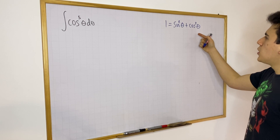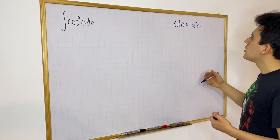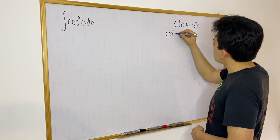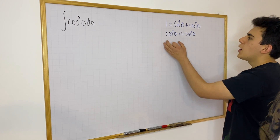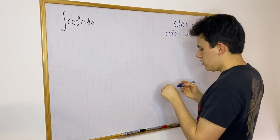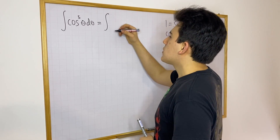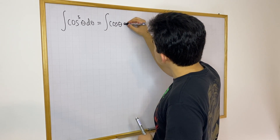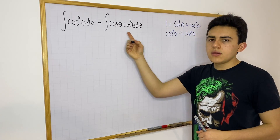So now, I want you to notice something. We can rewrite cosine squared in terms of 1 and sine squared. I'm going to do the following: cosine squared theta is going to be equal to 1 minus sine squared theta.